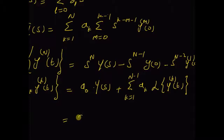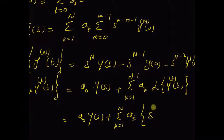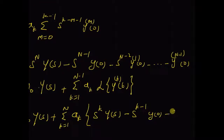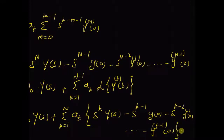So this is equal to a_0 Y(s) plus the sum k equal to 1 to n, a_k multiplied by s^k Y(s) minus s^(k minus 1) y(0) minus s^(k minus 2) and the initial value of the first derivative, and so on. The last term is the initial value of the k minus 1 derivative.